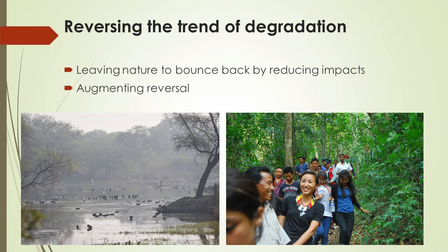One of the major objectives is to reverse the trends that have brought about degradation. There are two ways: one is to leave nature alone to bounce back on its own, but that takes a very long time. The other is to augment and speed up that process. Basically, it is nature coming back to its original form. Bharatpur is an engineered ecosystem that manages water levels, inflow, and outflow. The other example is a spontaneous regrowth in a village called Jaluki in Nagaland, where they did a fantastic eco-restoration job over 20 years, with nature coming back on its own without much intervention.